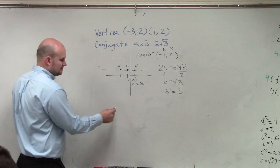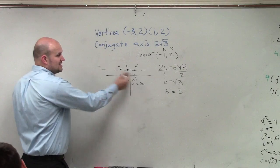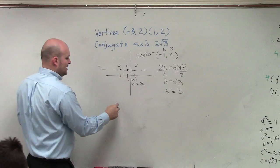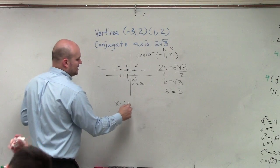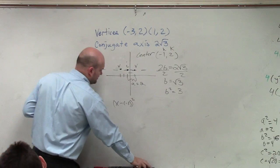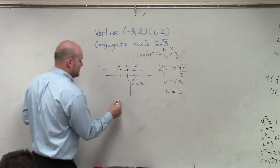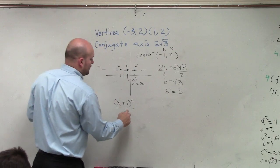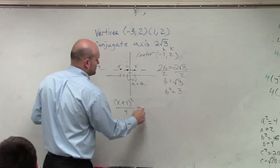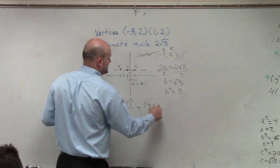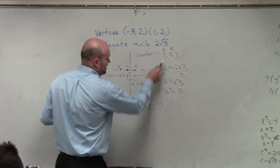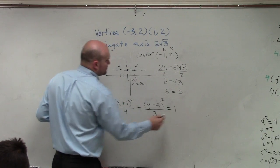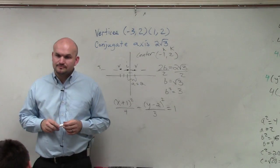Now, we just write in our equation. So again, since we have a transverse axis that's horizontal, we know that our a² is going to be under our x. So we have (x + 1)² over a², which is 4, minus (y - 2)² over b², which is 3, equals 1. And that's it.